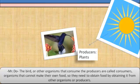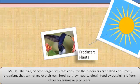The bird or other organisms that consume the producers are called consumers. Organisms that cannot make their own food need to obtain food by getting it from other organisms or producers.